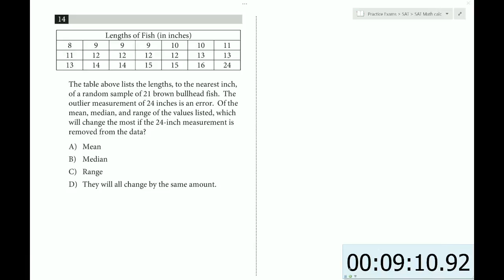The table above lists the lengths to the nearest inch of a random sample of 21 brown bullhead fish. The outlier measurement of 24 inches is an error. Of the mean, median, and range values listed, which will change the most if the 24-inch measurement is removed from the data? This is a bit of a conceptual question. Basically, the answer is the range.